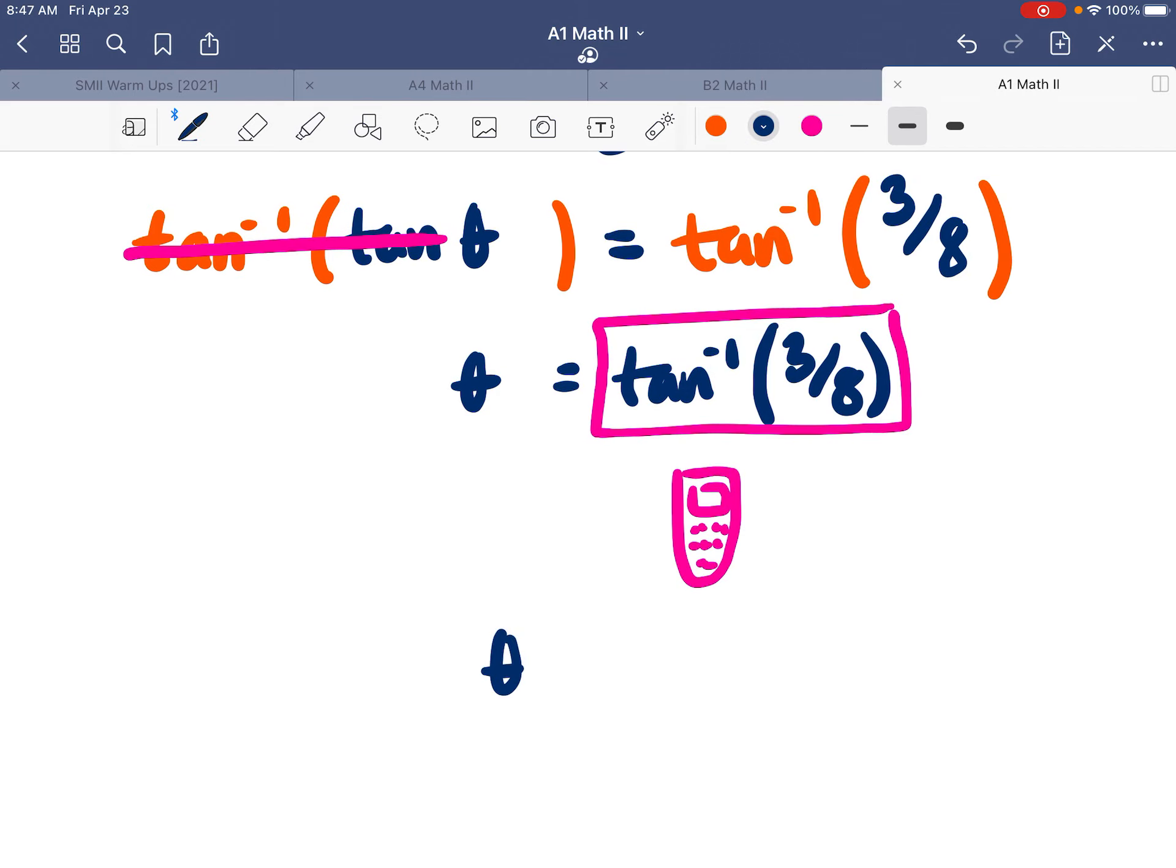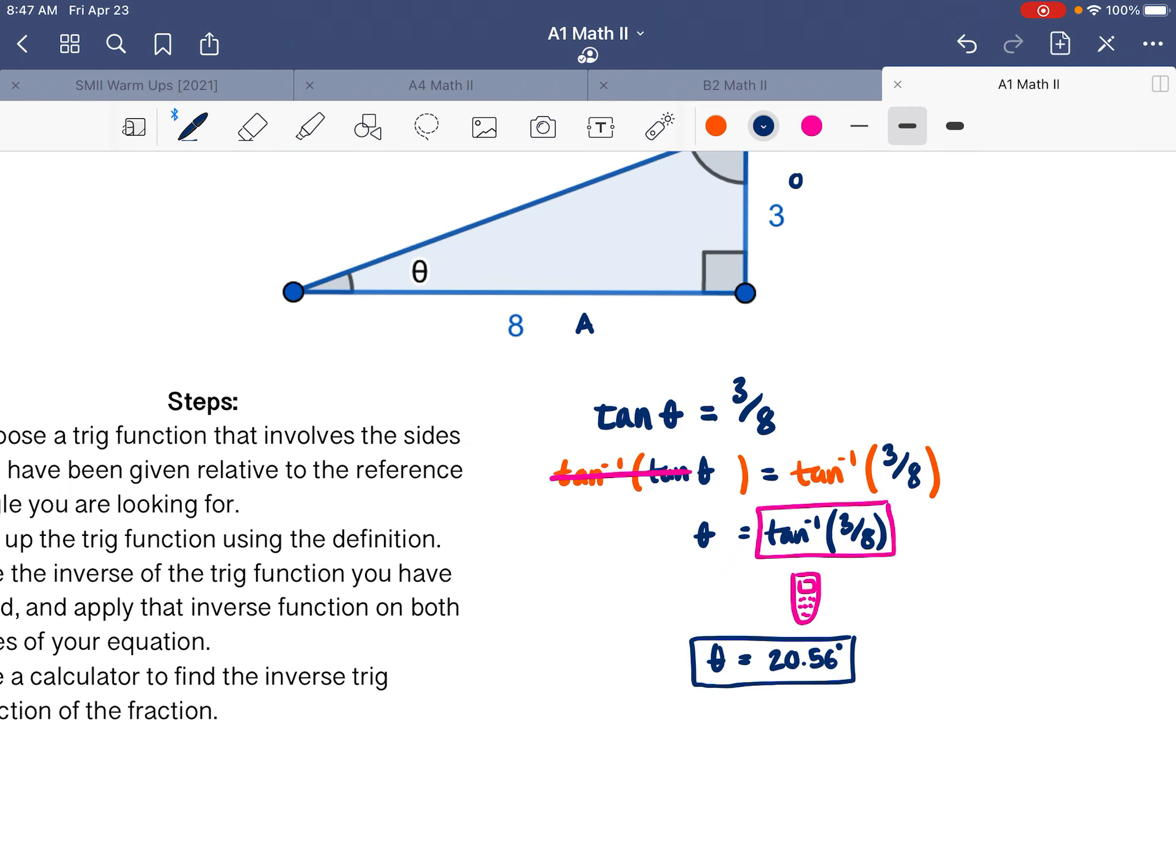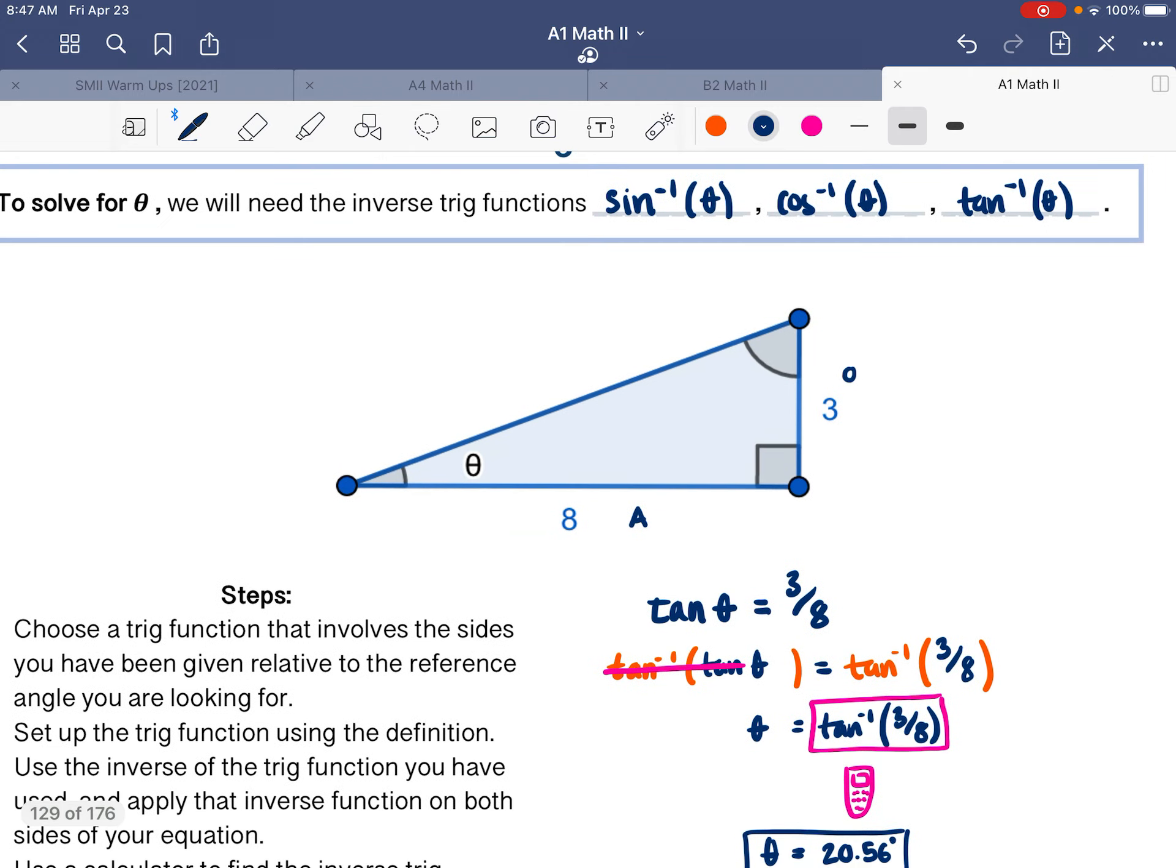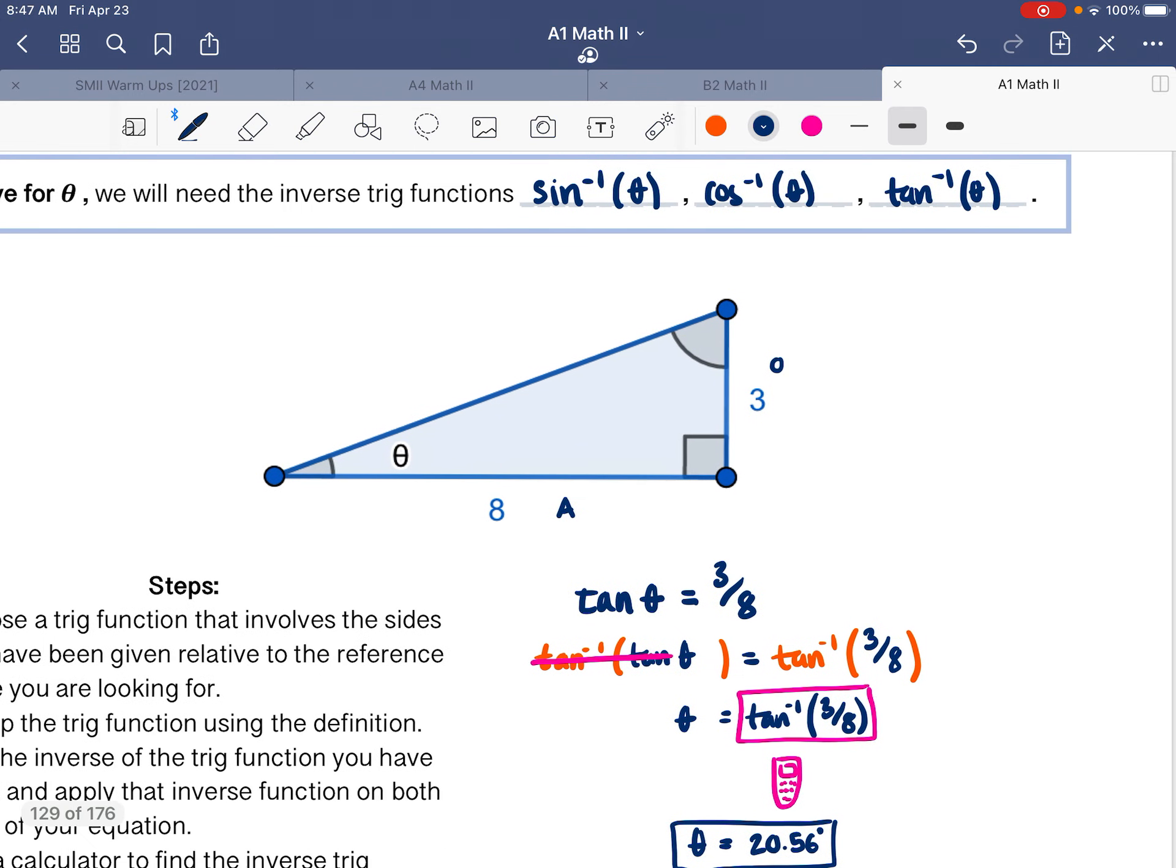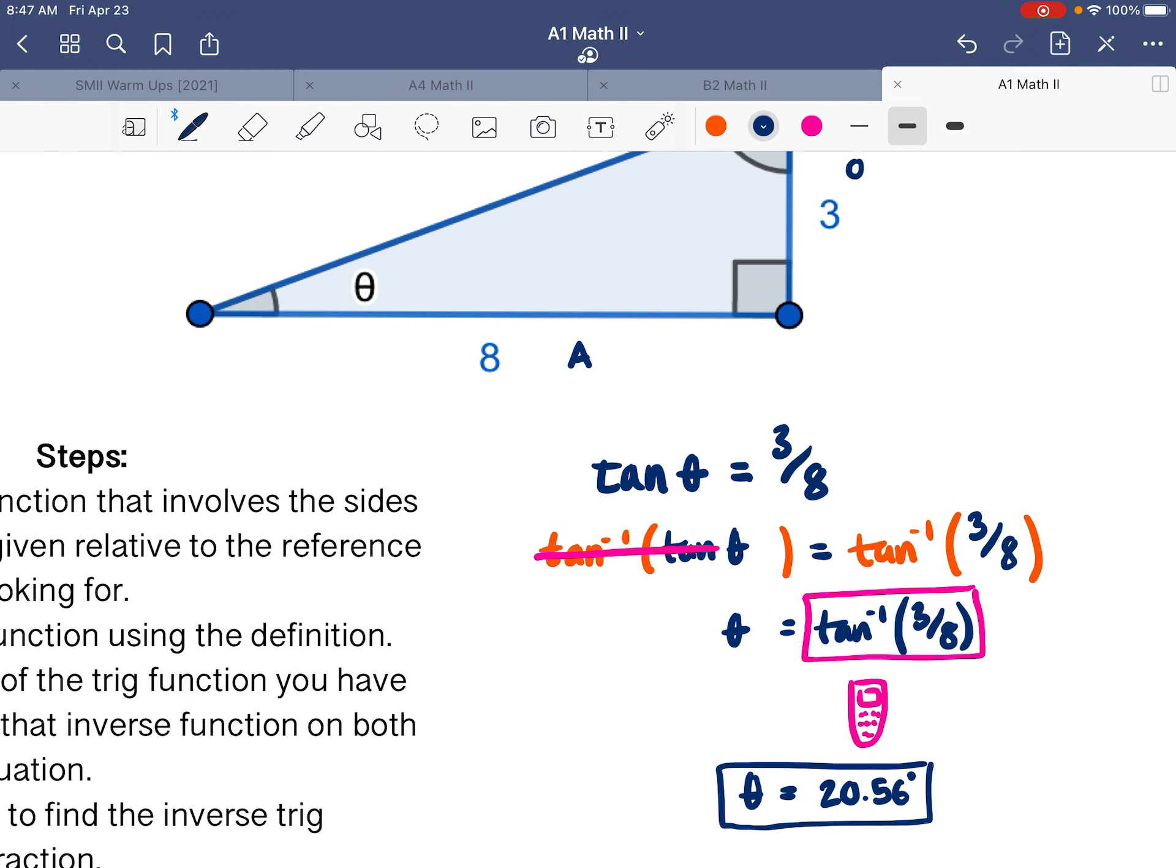So we're calculating that, and that gives us a value of 20.56. And the units here are degrees, because we are dealing with, this is a missing angle, right? So our angle is 20.56 degrees. And essentially, that's the whole thing. We just use these inverse trig functions to undo our trig functions in order to find missing angles in a triangle.